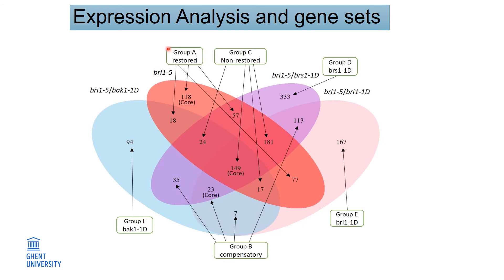So, the restored genes are the genes that are differentially expressed in BRI1, but no longer differentially expressed in three suppressor lines.